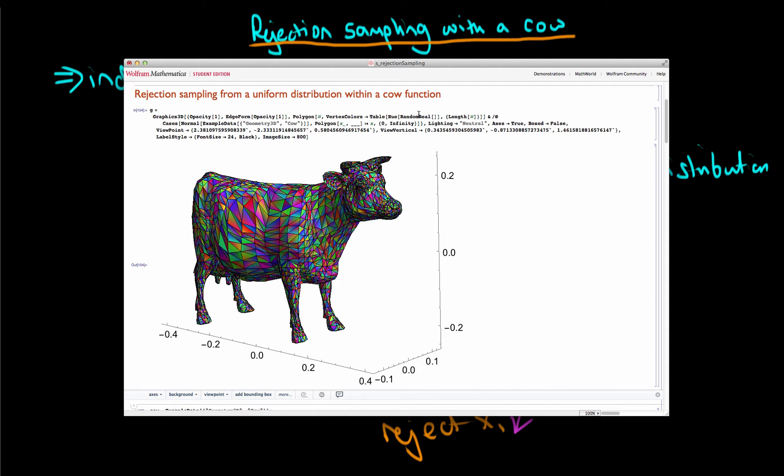And what we're going to do now is we're going to try and sample from the distribution which is uniform within the cow's boundaries.